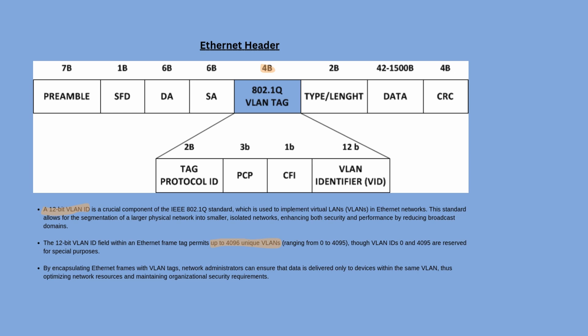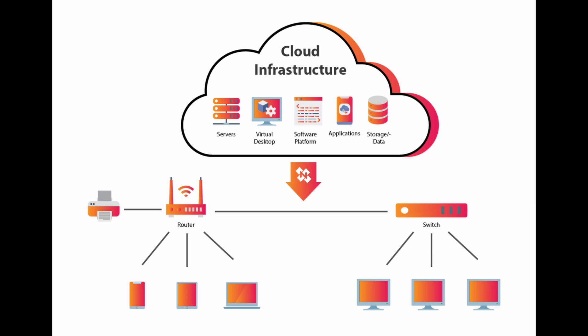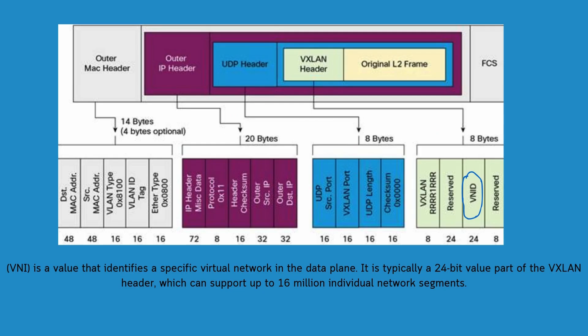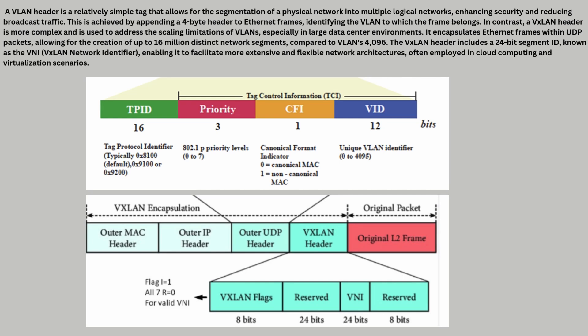12 bits ki VLAN ID field se jo number of VLANs milte hain woh milte hain 4096. Toh typical enterprise network ke liye 4000 VLAN kaafi hoti hain, but agar hum cloud infrastructure ya kisi large data center ki baat karein toh 4000 VLAN sufficient nahi honge. Jaisa jaisa cloud computing aur data center network mein growth aaya - for example Amazon, Google, Microsoft - in mein hazaron ki ginti mein virtual machines deploy hone lage, VLANs ki demand zyada hone lagi. In cloud service providers ya data centers mein hazaron customers hote hain aur har customer ko multiple layer 2 segments ki zarurat hoti hai. Isliye aise solution ki zarurat hone lagi jo VLAN number ki is limitation ko door kar sake. Aur 4096 VLAN ki yahi limitation ek wajah thi jiske wajah se hum VXLAN ka use karne lage.